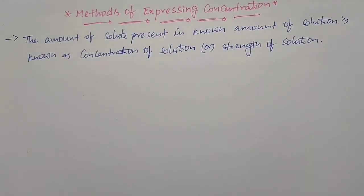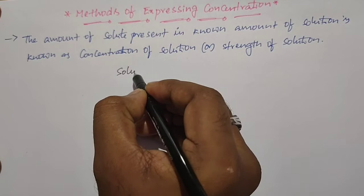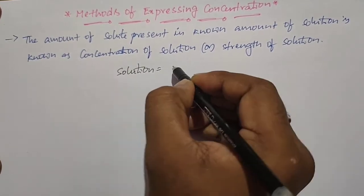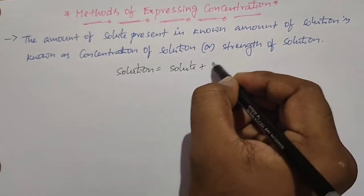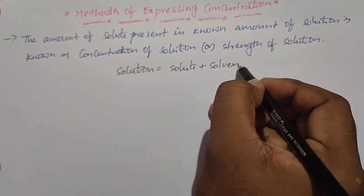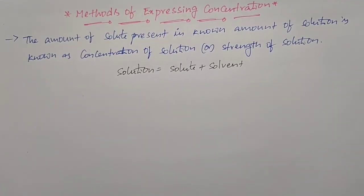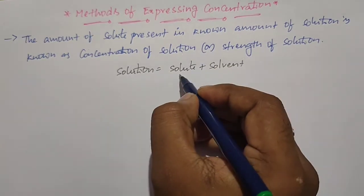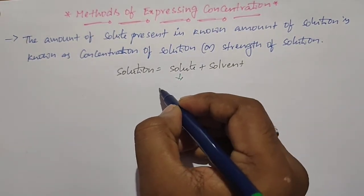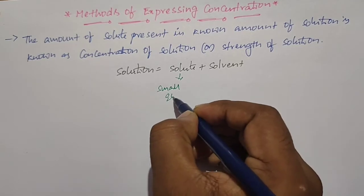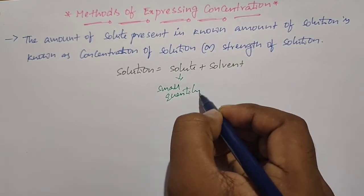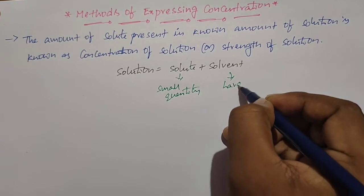In the solution we have mainly two components. The component in large quantity is called the solvent, and the small quantity component is called the solute. So, solution equals solute plus solvent, where solute is present in small quantity and solvent in large quantity.